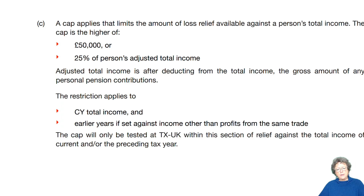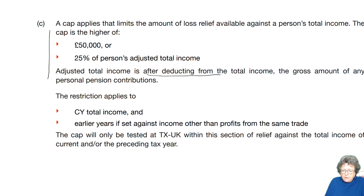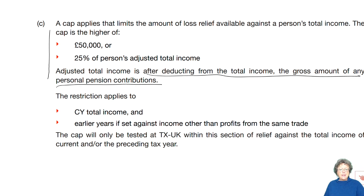This cap applies and limits the amount of loss relief that is available to be claimed. The cap is the higher of £50,000 or 25% of your adjusted total income. Adjusted total income is after deducting from the total income the gross amount of any pension contributions, a bit like ANI. The restriction applies to your current year total income and earlier years if it's set against income other than profits from the same trade.